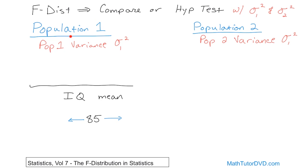The problem is your population one might be a million people and population two might be a million people, so you can't give the test to everybody. In statistics, we can't collect data from everybody, so what we do is sample. Within population one we sample n-sub-1 people, and in population two we sample n-sub-2 people. n-sub-1 is how many people we give the test to because we can't afford to give it to a million people.